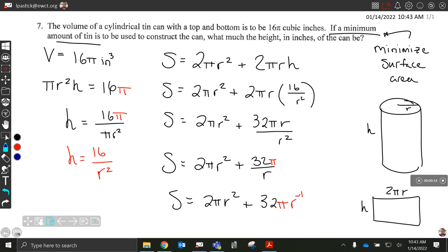Okay, so in this video I'll be going over how to minimize the amount of tin needed to create a cylindrical can with a top and bottom when I am given the volume of that tin can. The volume of a cylindrical tin can with a top and bottom is to be 16π cubic inches.